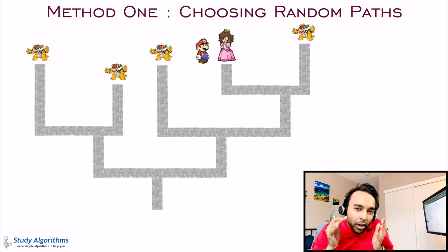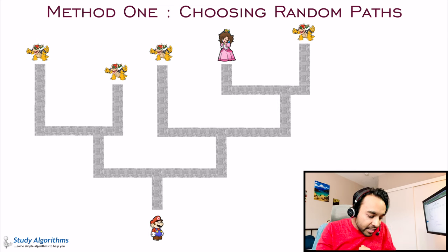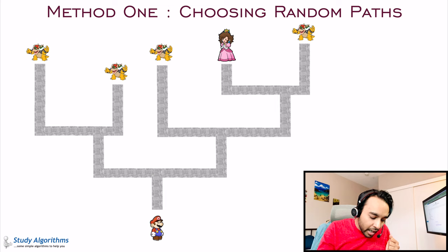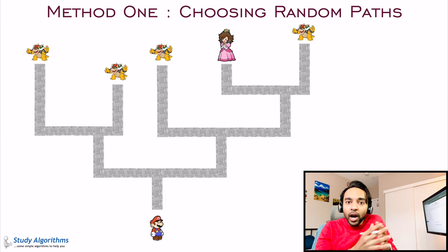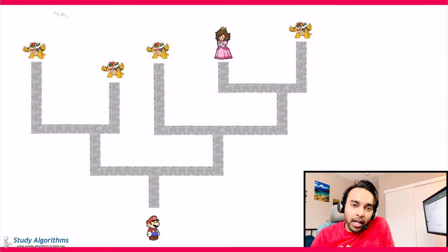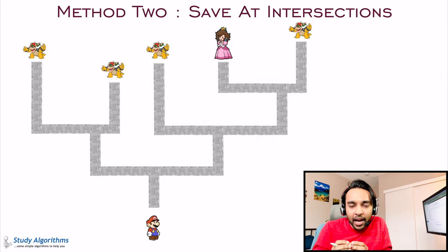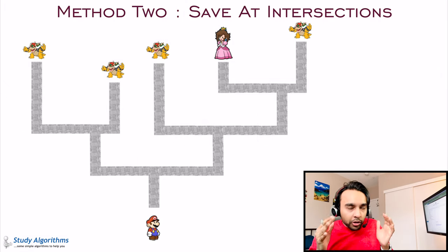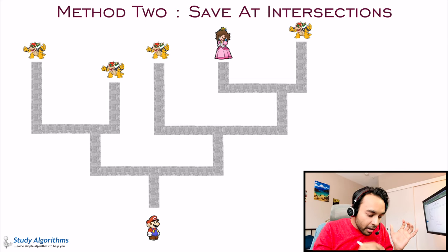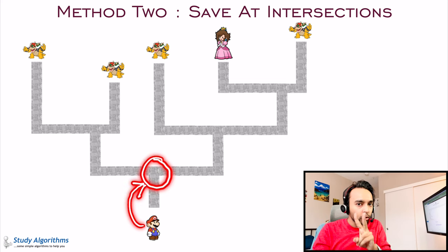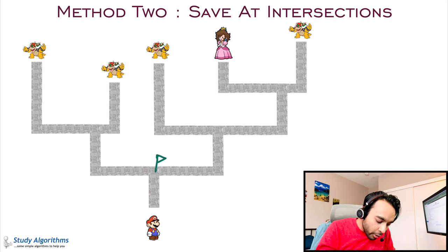So this approach is not efficient. The problem is that whenever you start a path, you do not know whether to go left or right. And the next time you encounter the same position, you do not know if you have already gone towards the left. If you play video games a lot, one thing that could come to mind is you can save your game at several instances. So you can try to form a strategy — whenever Mario arrives at any point where you have two choices, you can save your game at that point.